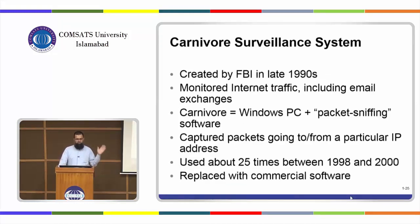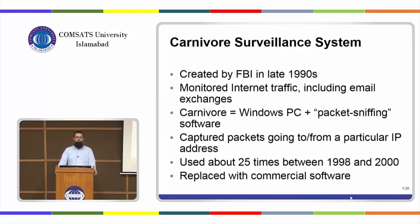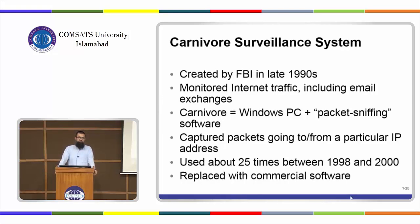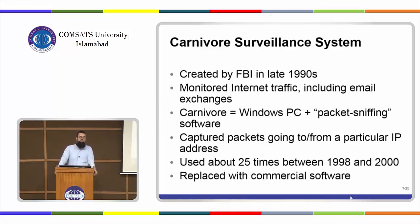When PCs and the internet became common, US agencies started monitoring internet traffic, with access to emails and other communications. There are some success stories of identifying illegal activities or threats to national security, but again it represents a compromise on individual privacy.